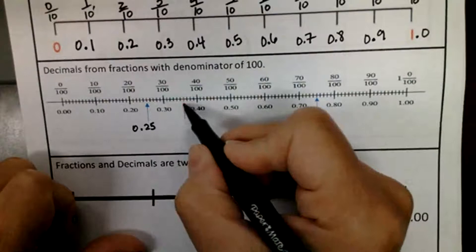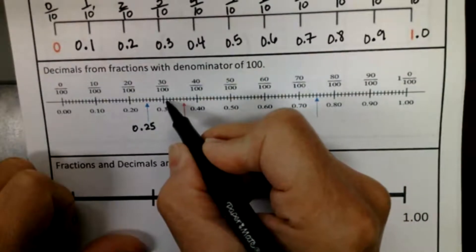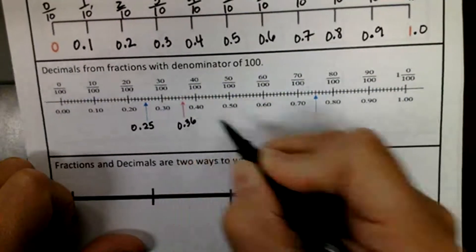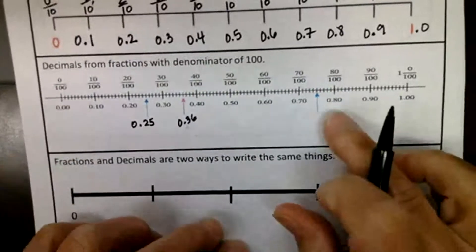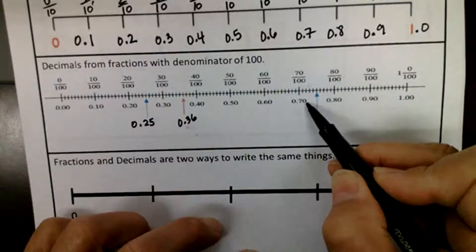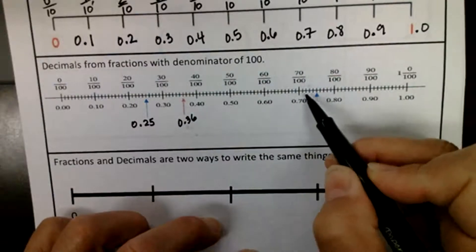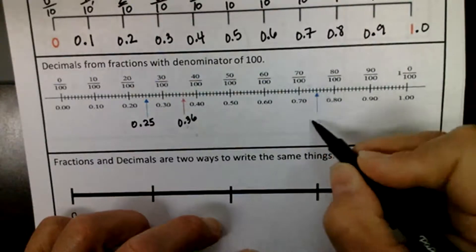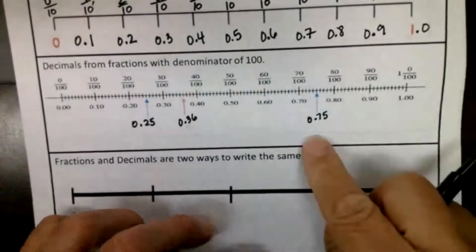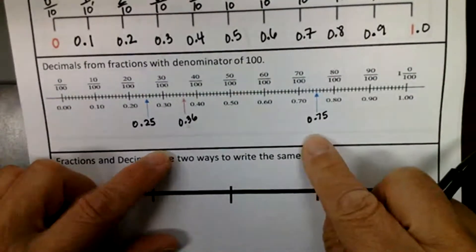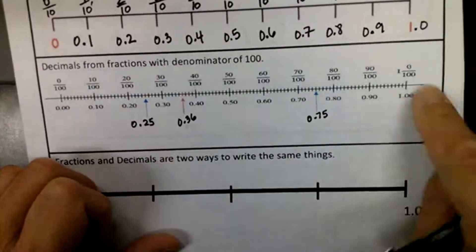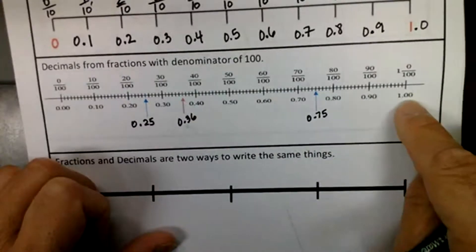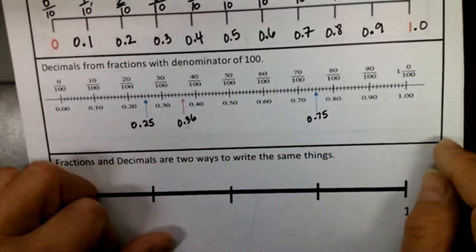Let's figure out what this one is. If this is thirty one-hundredths, that's thirty-one, thirty-two, thirty-three, thirty-four, thirty-five, thirty-six. That's zero point three six one-hundredths. Let's do this blue one down here. Here is zero point seven zero, so that's seventy, seventy-one, seventy-two, seventy-three, seventy-four, seventy-five — zero point seven five. The reason it's zero in the front is because we haven't gotten to one yet. Once we get past one, then we would have one in the front. These are still just parts of the whole.